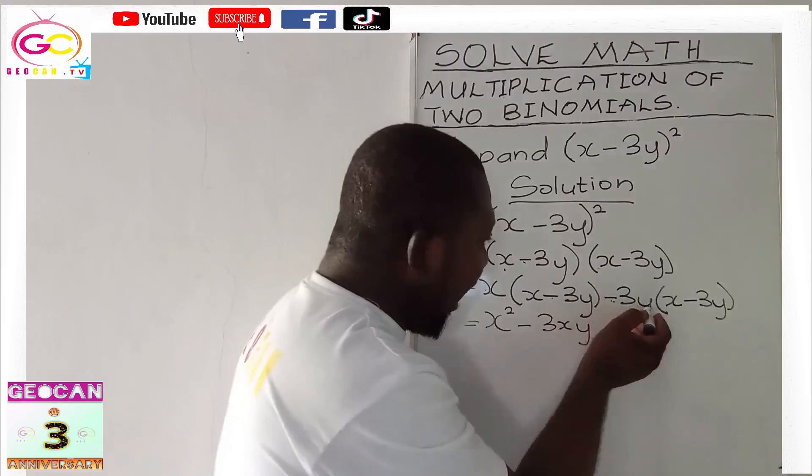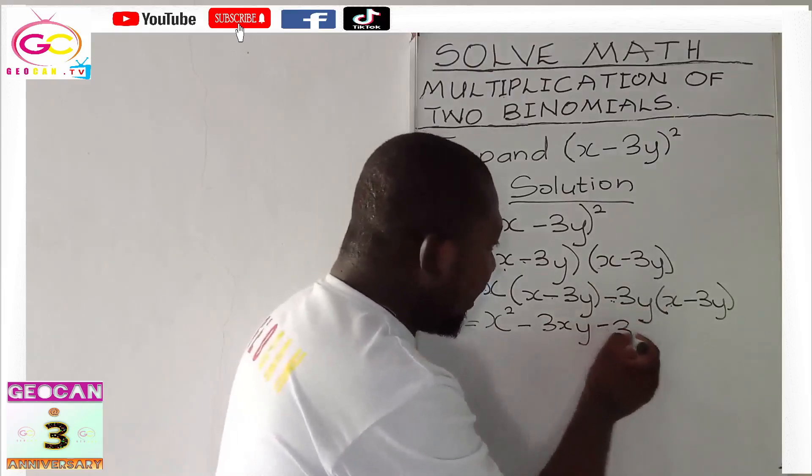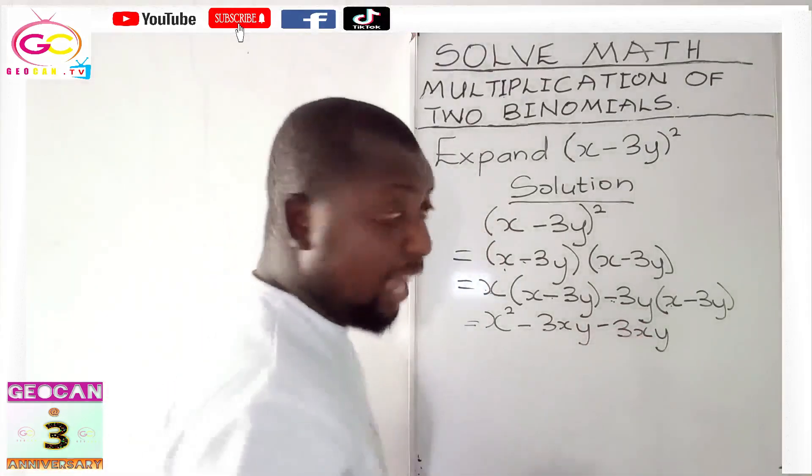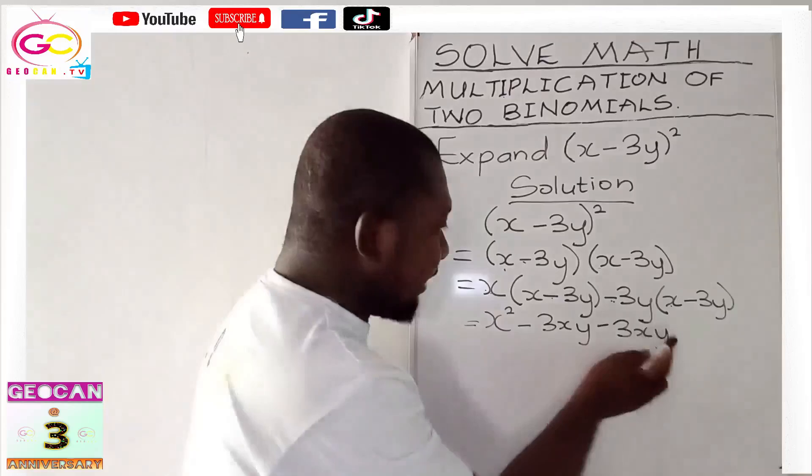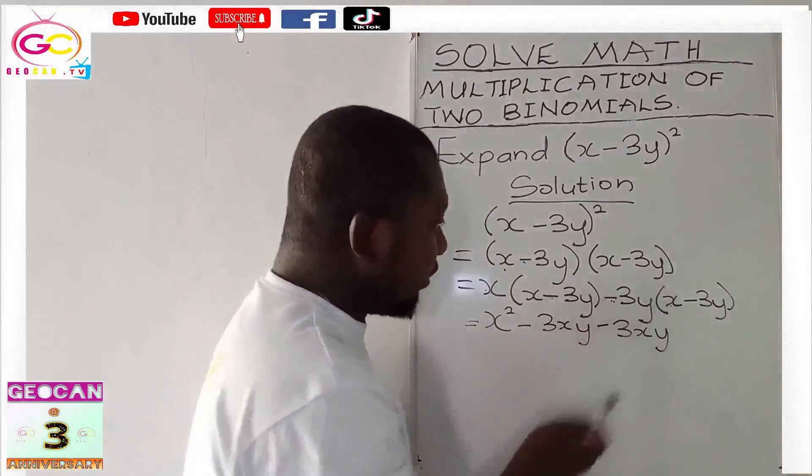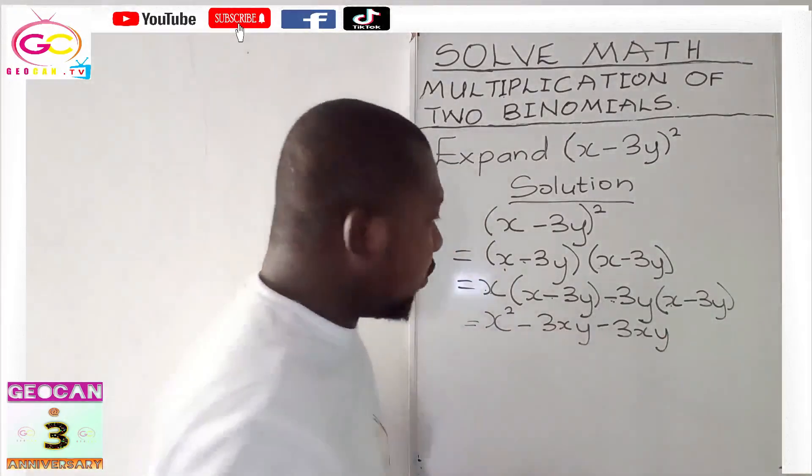Now, we have here negative 3y times x. It will give us negative 3xy. As I said, it's arranged alphabetically. That is why the x comes before y. And we know that any time a negative multiplies a positive, the answer becomes negative. It's so critical.